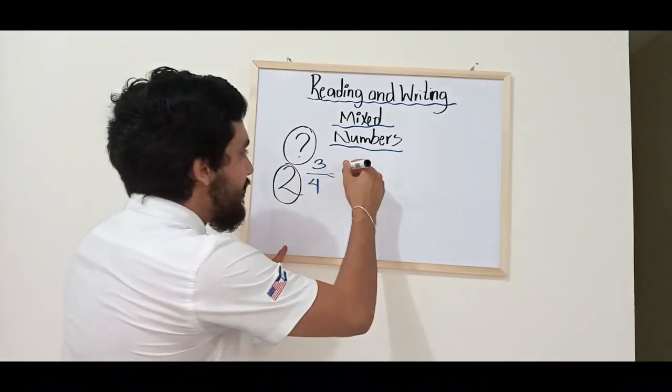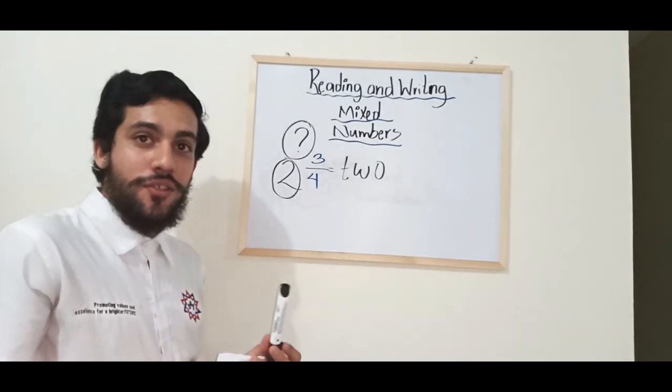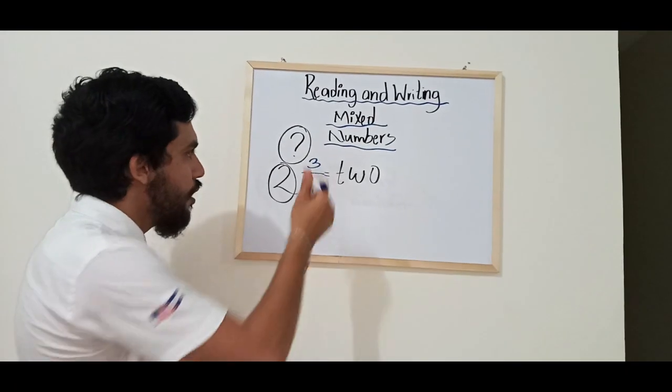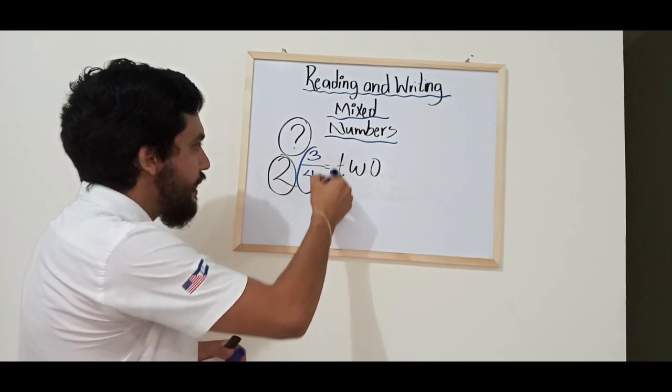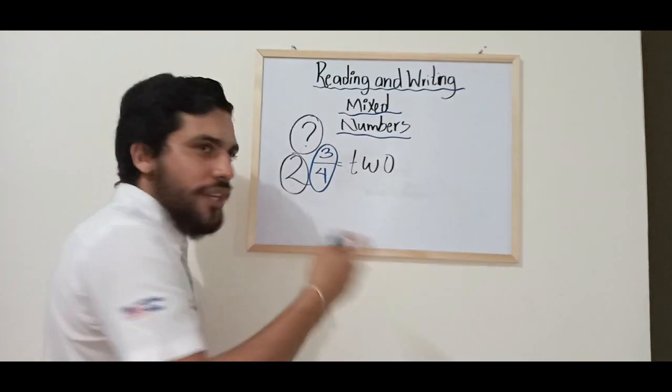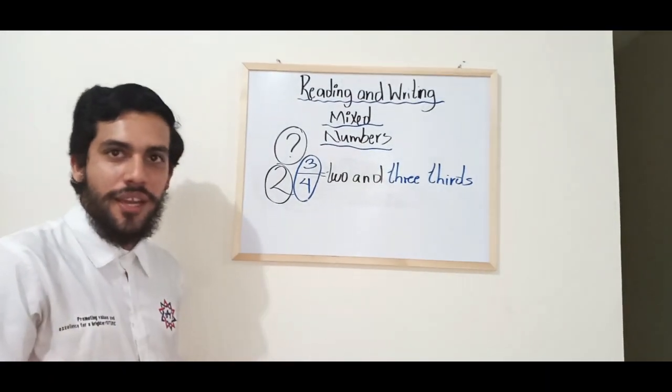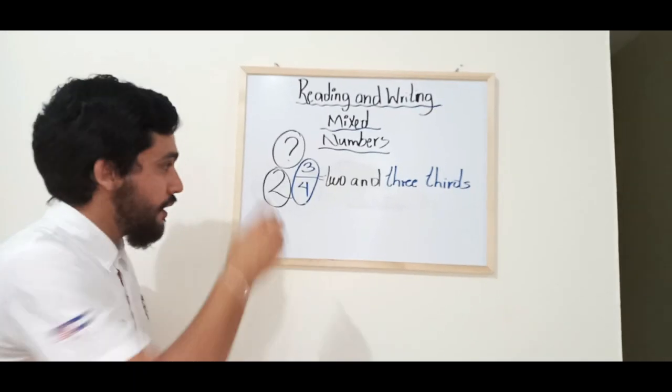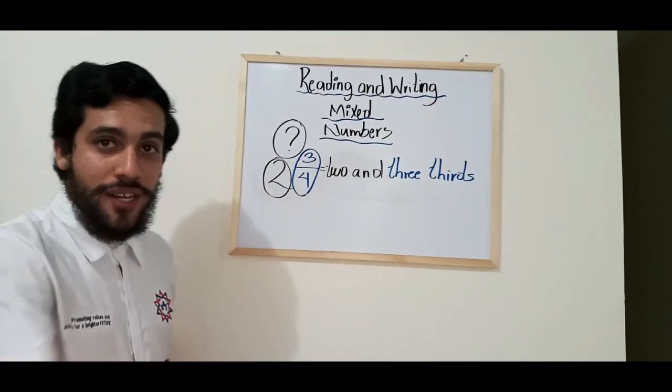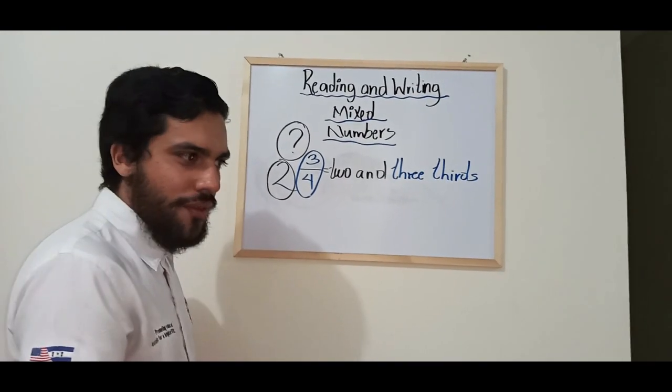The whole number is read as you always do it. So what happens then with this number right here? Well, you read it as I was teaching you before. This is read as 2 and 3 thirds. So it is very simple. Just read the whole number as you always do it, and then the fraction in the way I was teaching you before. Let's do another example.